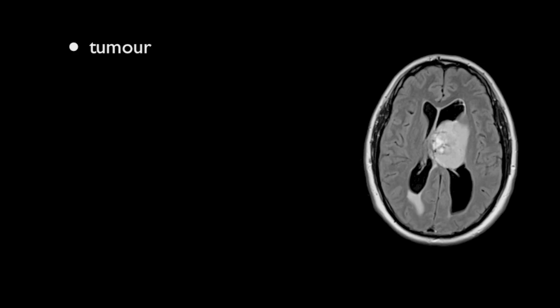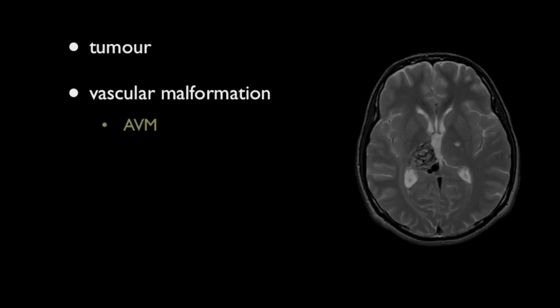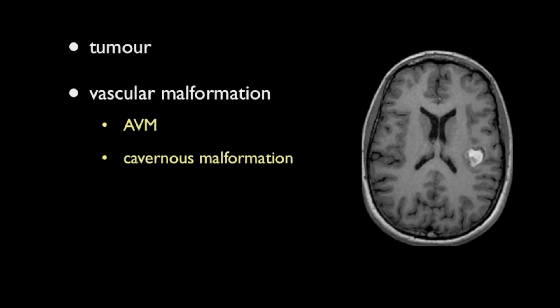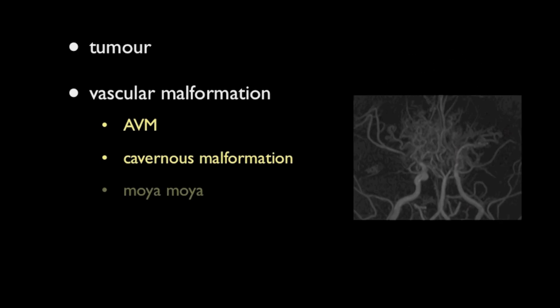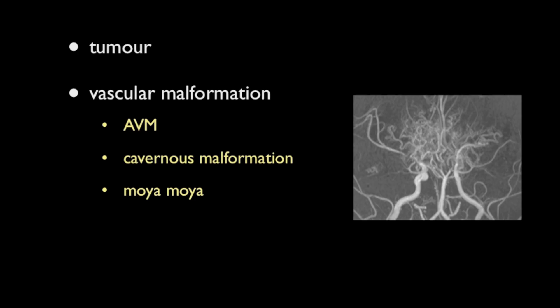The differential for a hypertensive hemorrhage includes an underlying tumour, an underlying vascular malformation — either a small arteriovenous malformation or a cavernous malformation — and specifically in the case of basal ganglia hemorrhages, that of underlying Moyamoya disease, where the abnormal enlarged perforator vessels are prone to hemorrhage.